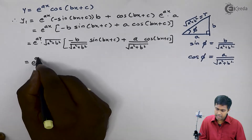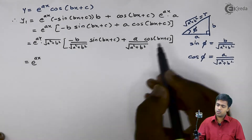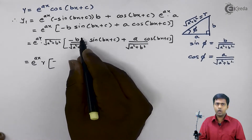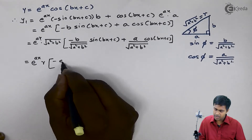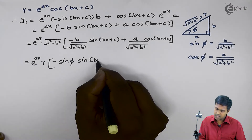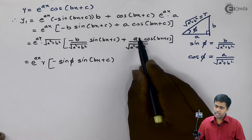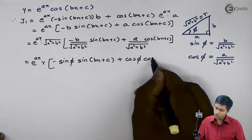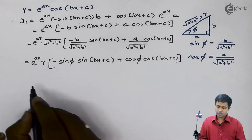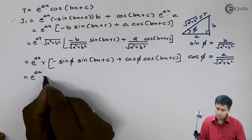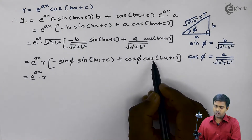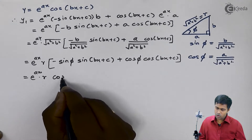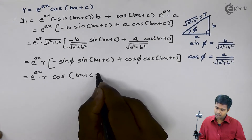Substituting root of a squared plus b squared as r, and recognizing that b upon root of a squared plus b squared is sin phi and a upon root of a squared plus b squared is cos phi, we get y1 equals e raised to ax times r, inside the bracket: minus sin phi times sin of bx plus c plus cos phi times cos of bx plus c. This matches the formula cos of bx plus c plus phi, giving us y1 equals e raised to ax times r times cos of bx plus c plus phi.